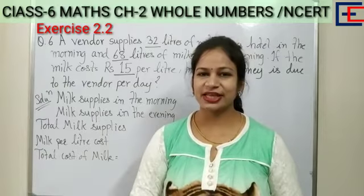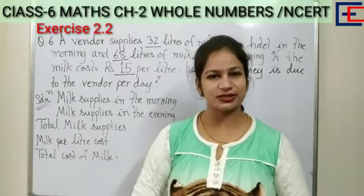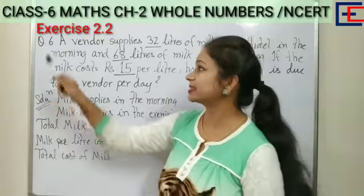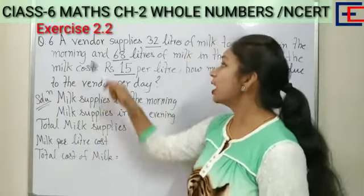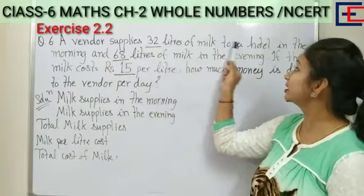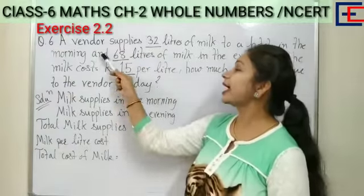Hello viewers, my name is Avantika Sharma, your math tutor. Let's proceed with today's topic, that is question number 6 of Exercise 2.2. A vendor supplies 32 liters of milk to a hotel in the morning and 68 liters of milk in the evening.